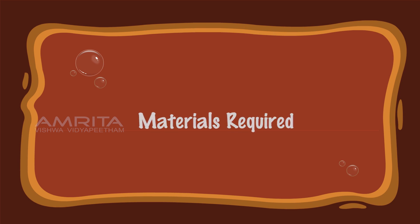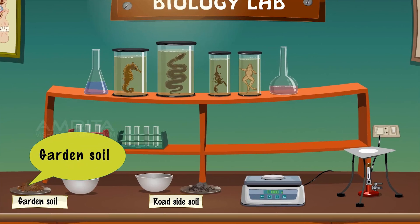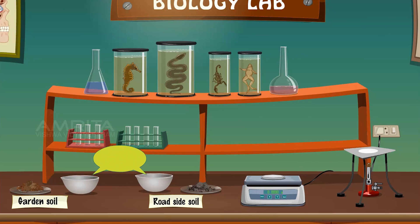Materials required: garden soil, crucibles, roadside soil, weighing balance, burner, and wire gauze.